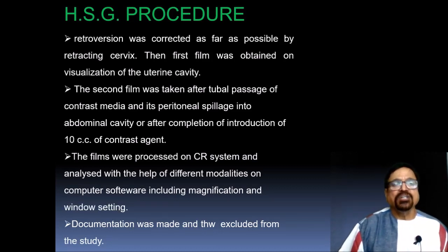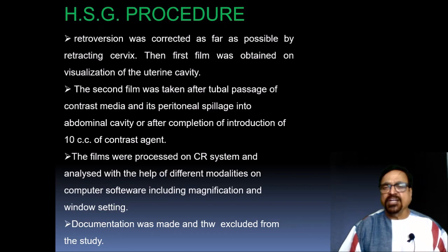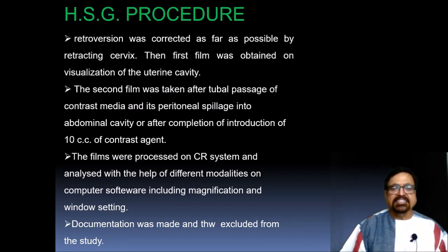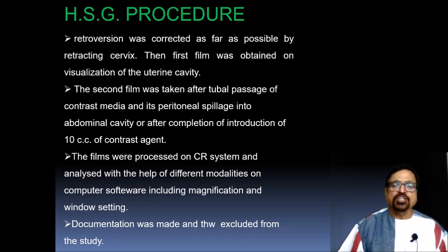The procedure: retroversion is corrected first if present, otherwise contrast will not enter the uterine cavity. The first film is obtained under fluoroscopy when the dye has entered the uterine cavity and fallopian tubes but not crossed into the peritoneal cavity — to avoid overlapping. The second film is obtained when there is tubal passage of contrast and peritoneal spillage into the abdominal cavity. Usually 10 cc of contrast is sufficient. Once spillage is confirmed, no additional contrast is needed. Documents are reviewed in the CR room along with fluoroscopy findings.